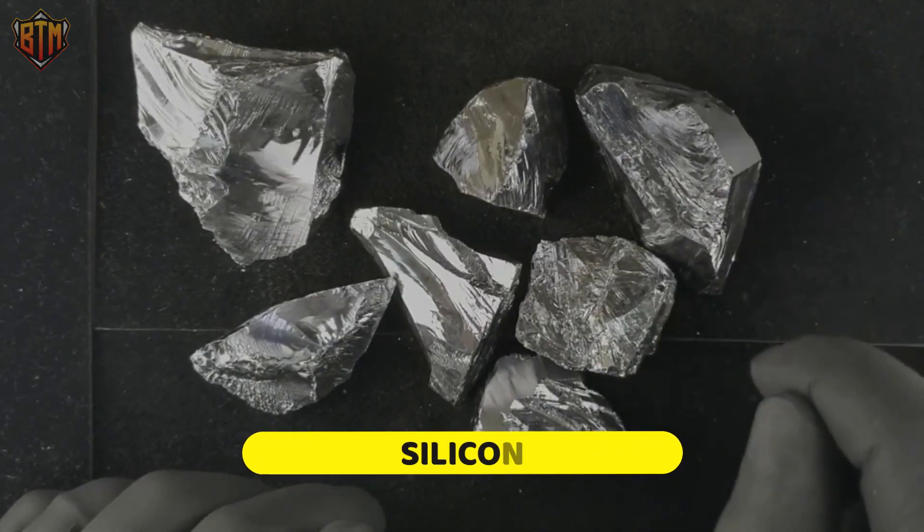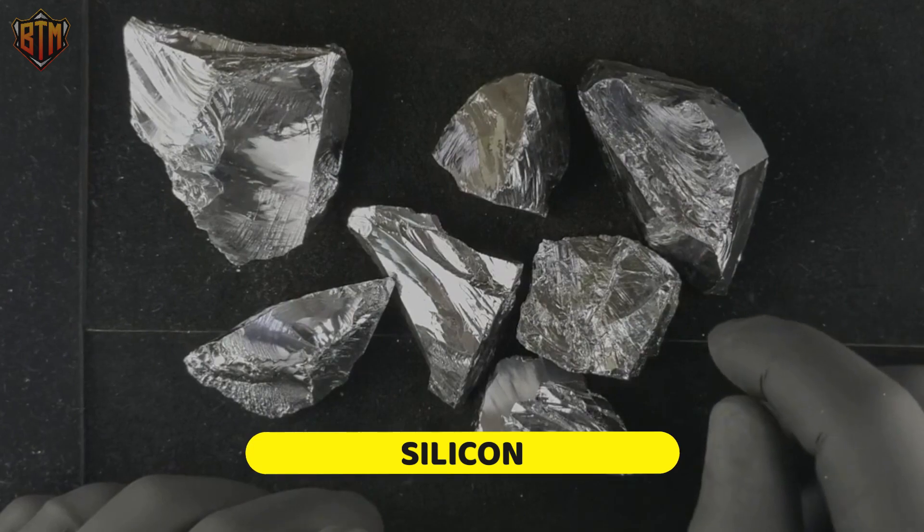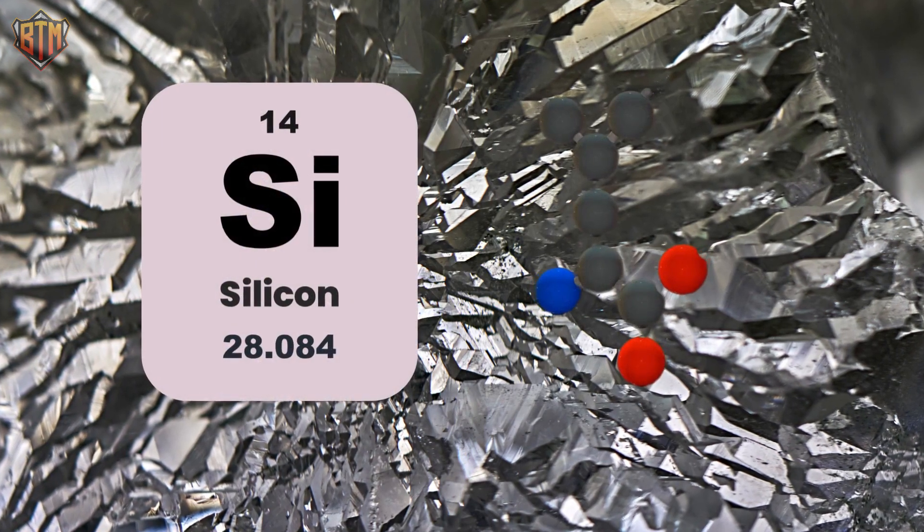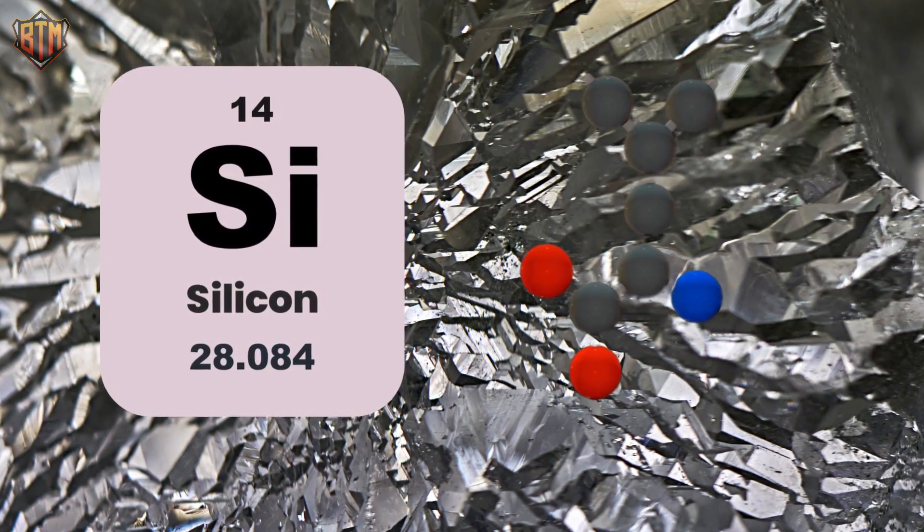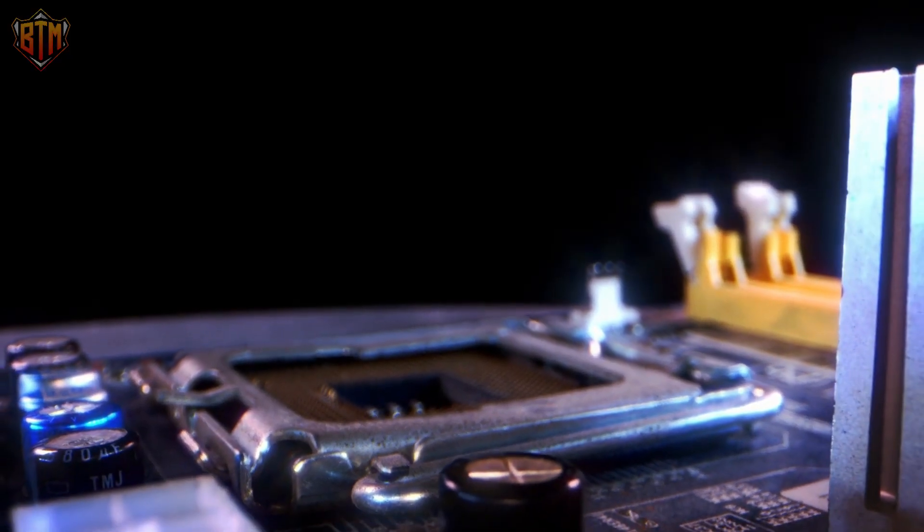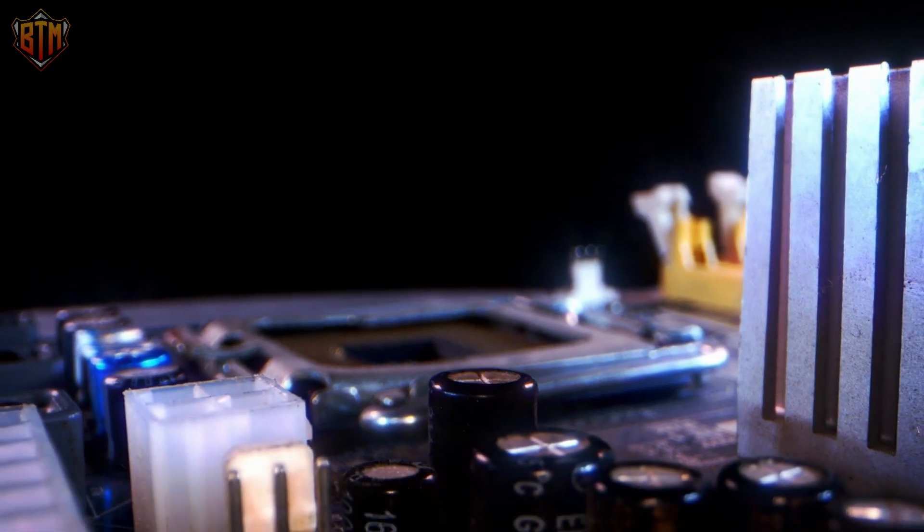Silicon, the material used to make transistors, rarely conducts electricity. Since silicon is a semiconductor, it isn't an insulator or a conductor. But how do transistors in your computer operate?